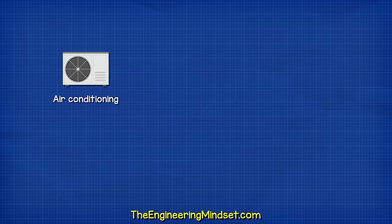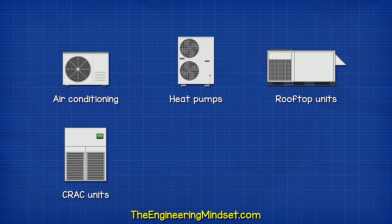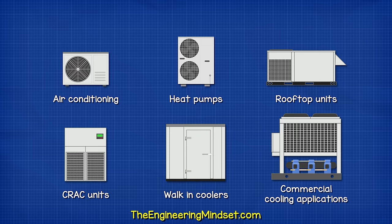We call them scroll compressors because inside we find two metal spiral-shaped scrolls which causes the compression. We can find them used in equipment like air compressors but we will be focusing on the refrigeration versions. We commonly find them used in air conditioning systems, heat pumps, rooftop units, CRAC units, walk-in coolers and we also find them grouped together for larger commercial cooling applications.